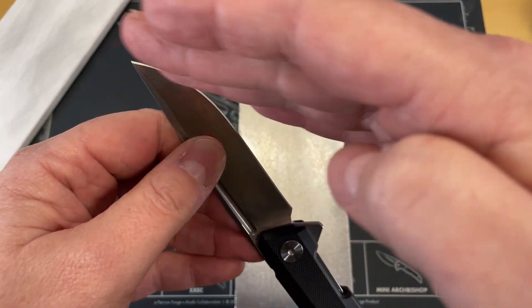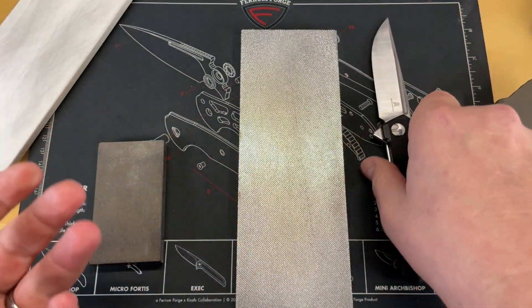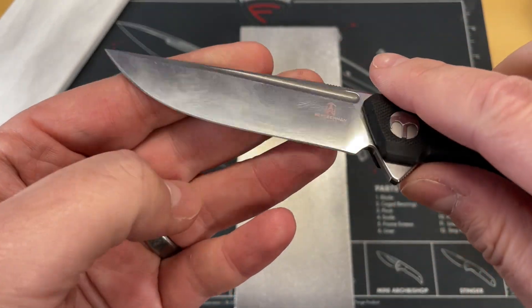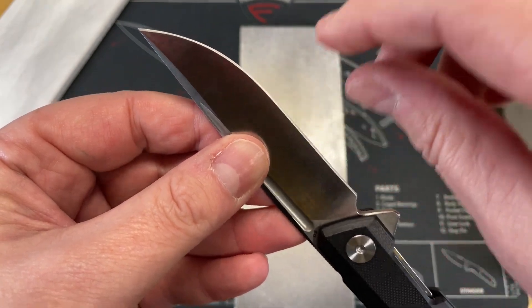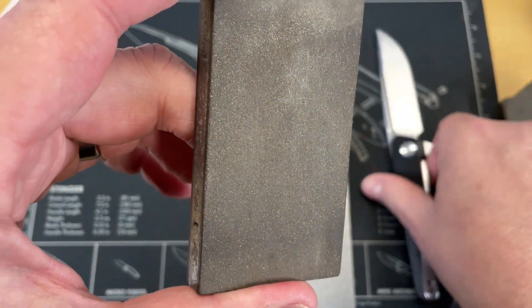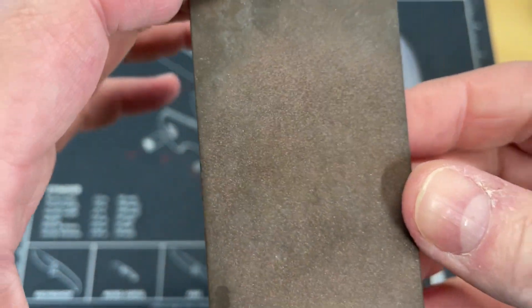So those teeth are going to be going this way. Your coarser ones are going to be the bigger teeth on a saw because they're going to cut in and leave a much deeper and broader scratch pattern. You start working your way up through the scratch pattern. You can see that those diamonds are fairly large. These diamonds are a good bit smaller.